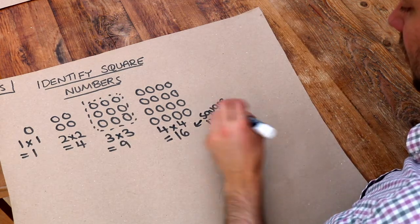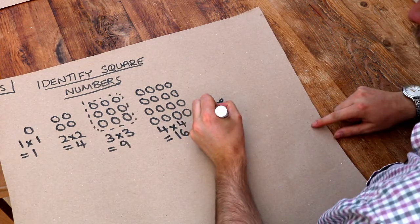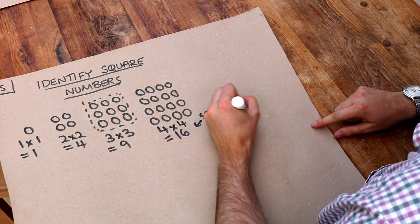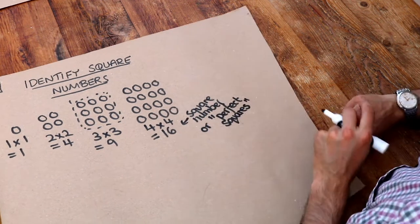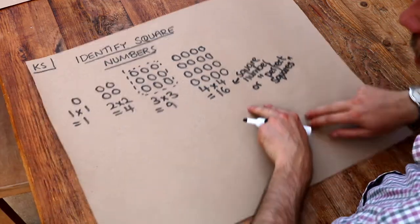And sometimes you might even see them be described as perfect squares. And I'm not going to describe why we call them perfect squares, but that just means the same as square numbers.